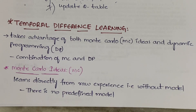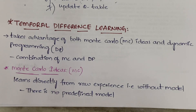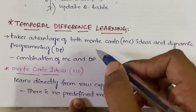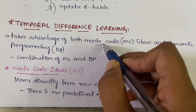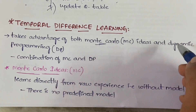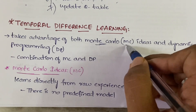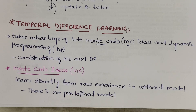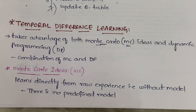Temporal difference learning takes the advantage of both Monte Carlo ideas and dynamic programming. Simply put, it is a combination of both Monte Carlo and dynamic programming — MC and DP. The advantages of both MC and DP are taken into consideration when defining a temporal difference learning algorithm.